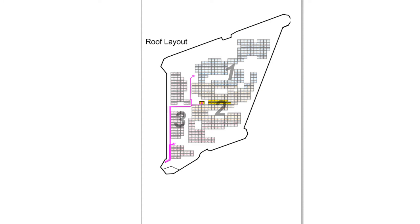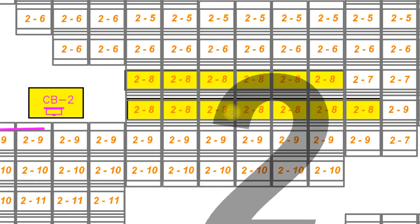Zoom in to find the location of panels connected in series as string 8 in combiner box 2. Look for a damaged connection or check each of the panels in the string to find which has a problem and needs replacing. Also check the fuse for string 8 in combiner box 2.